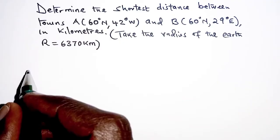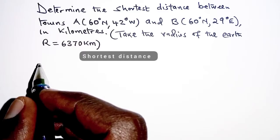The first thing we need to note is that the shortest distance between two points on the surface of the earth is the distance along a great circle.